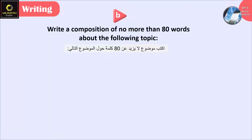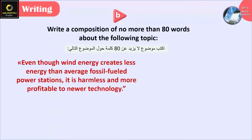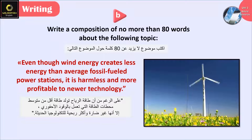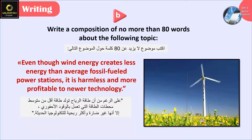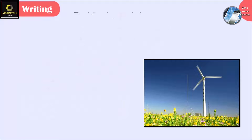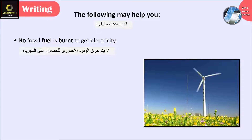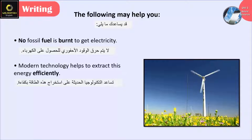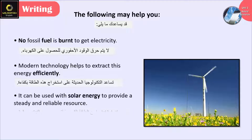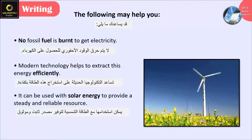Write a composition of no more than 80 words about the following topic. The following: even though wind energy creates less energy than average fossil fuel power stations, it is harmless and more profitable to newer technology. The following may help you: no fossil fuel is burned to get electricity; modern technology helps to extract this energy efficiently; it can be used with solar energy to provide a steady and reliable resource.